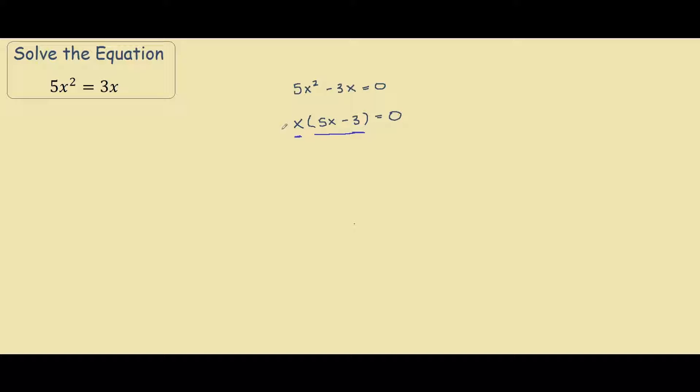So on this term over here, the x is quite simple. The solution is x equals 0 because if this was 0 times anything inside the bracket, it would be 0.